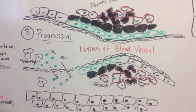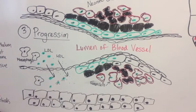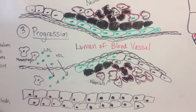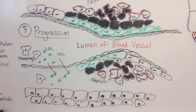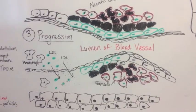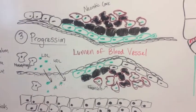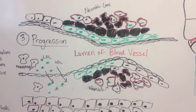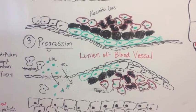Smooth muscle cells are then recruited to form the fibrous cap. This is a stable plaque. It is not in danger of rupturing as long as the cap is not thin.